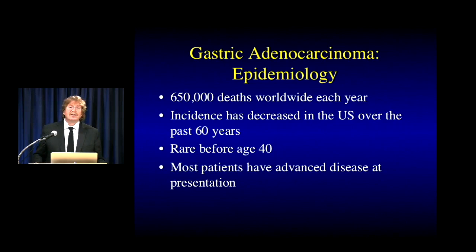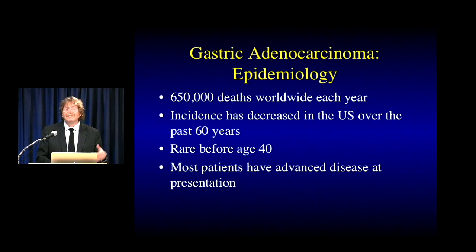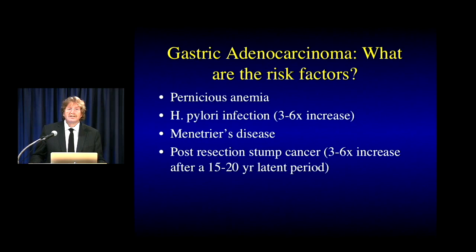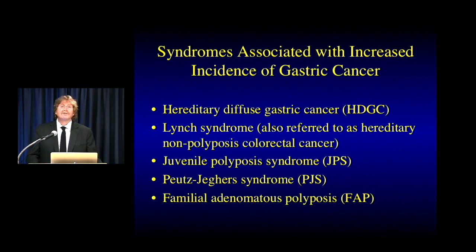Looking at specific tumors — gastric cancer causes 650,000 deaths worldwide. In the U.S., the incidence has decreased over the past 60 years; it's rare before age 40, and most patients present with advanced disease even today, though with endoscopy and earlier CT we are picking up earlier tumors. Increased risk factors include pernicious anemia, H. pylori infection (which increases risk by up to 6-fold), Menetrier's disease, and post-resection stump cancer. Associated syndromes include hereditary diffuse gastric cancer syndrome, juvenile polyposis, Peutz-Jeghers, and familial polyposis.